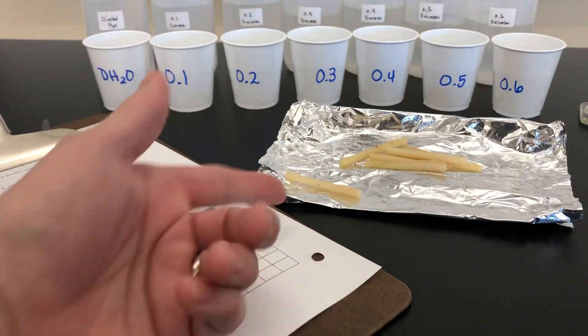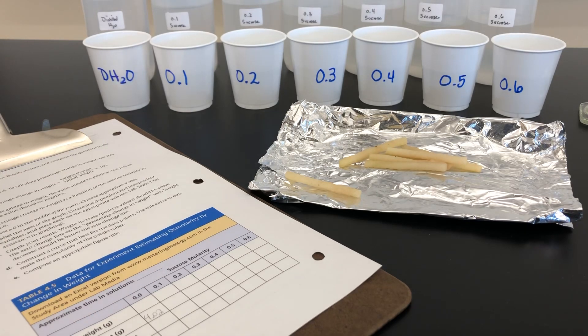After they were bored, they were cut to 5 centimeter lengths. We will weigh each piece, record that weight in Table 4.5, cut it in half lengthwise, and then place it in one of the cups.